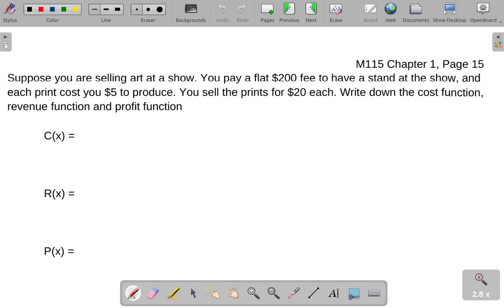Okay, let's do an example with a profit function. We generally call these profit functions because they involve cost, revenue, and profit. Suppose you're selling art at a show. You pay a flat $200 fee to have a stand. Each print costs you $5 to produce, and you sell prints for $20 each. Write down the cost function, the revenue function, and the profit function.